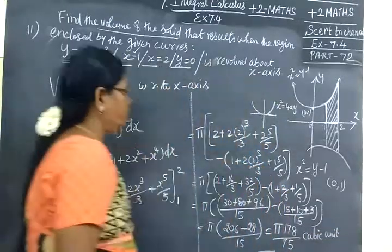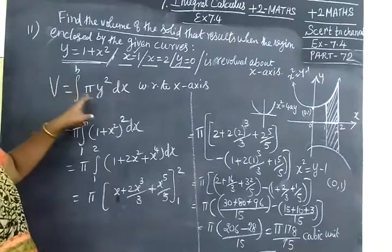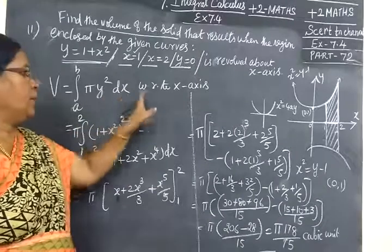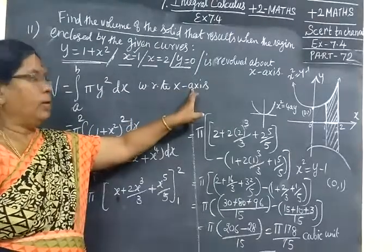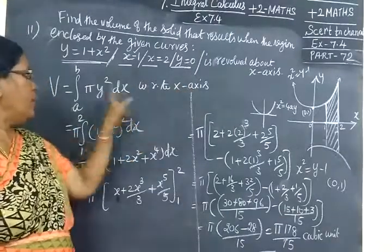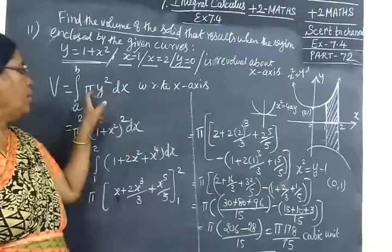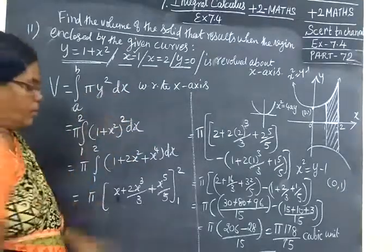This is a very simple sum. For area, you are using ydx, but for volume you are using πy² dx with respect to x-axis. For rotation about x-axis it's πy² dx, for y-axis it's πx² dy. That's it.